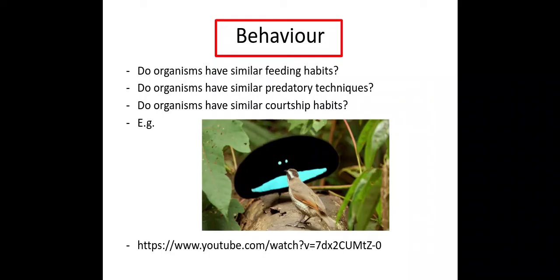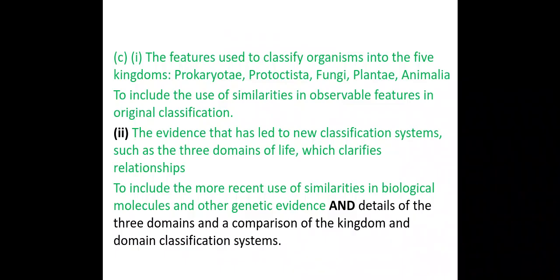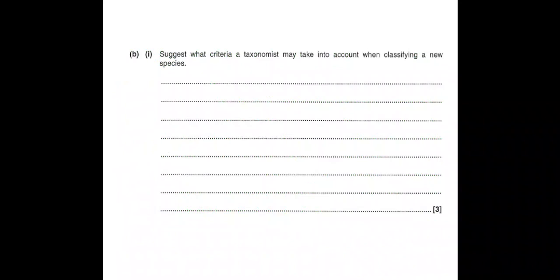That's everything we need to know about how scientists can use different pieces of evidence to classify organisms into groups based upon similarities and differences. Now let's have a look at an exam question. Here we must be underlining and highlighting keywords within the question.